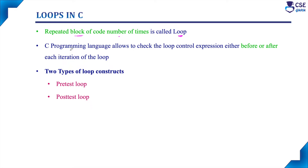In C programming language, based on the evaluation of the loop control expression, there are two categories of loops. Every iteration, the loop control expression will be tested — but the testing will happen either before executing the block of code or after executing the block of code. Based on that, there are two types of looping constructs.